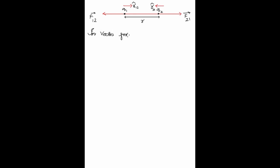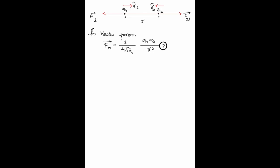We can write Coulomb's Law in vector form as: F₂₁ vector, which is the force on charge Q2 due to Q1, is equal to (1 / 4πε₀) × (Q1 Q2 / R²) × r̂₁₂. The first part, (1 / 4πε₀) × (Q1 Q2 / R²), gives the magnitude, and r̂₁₂ is the unit vector that gives the direction of the force, meaning F₂₁ is in the direction of r̂₁₂.